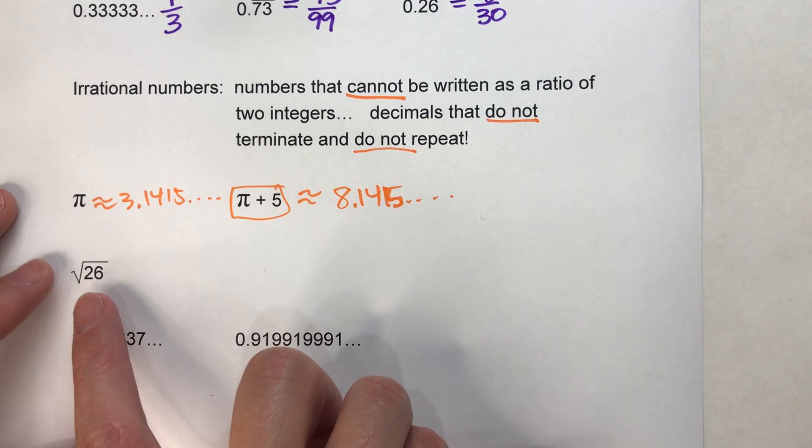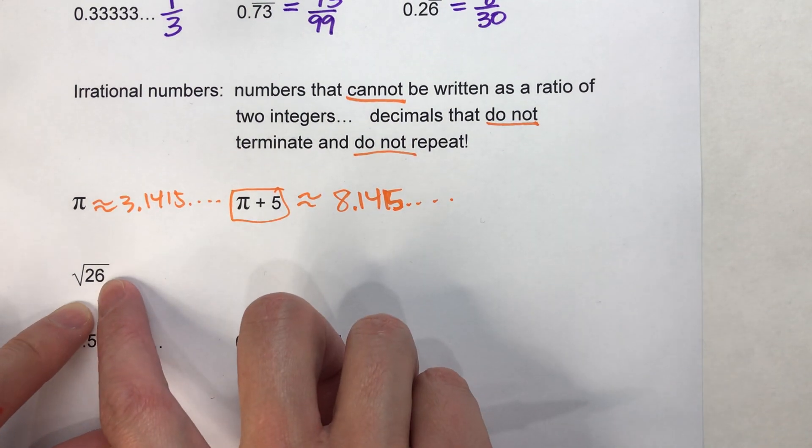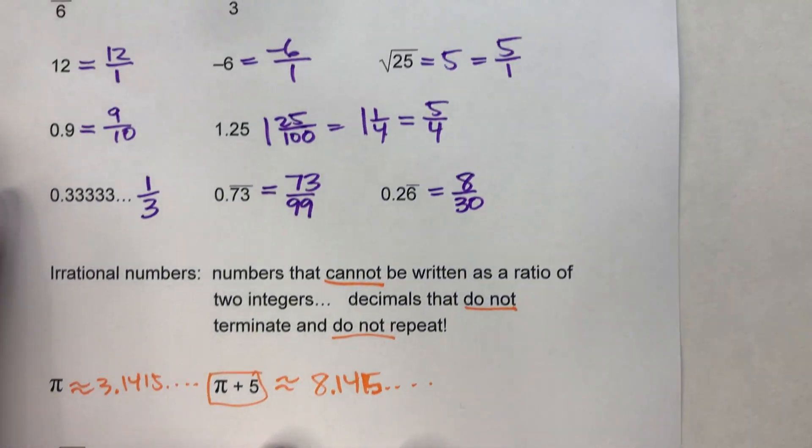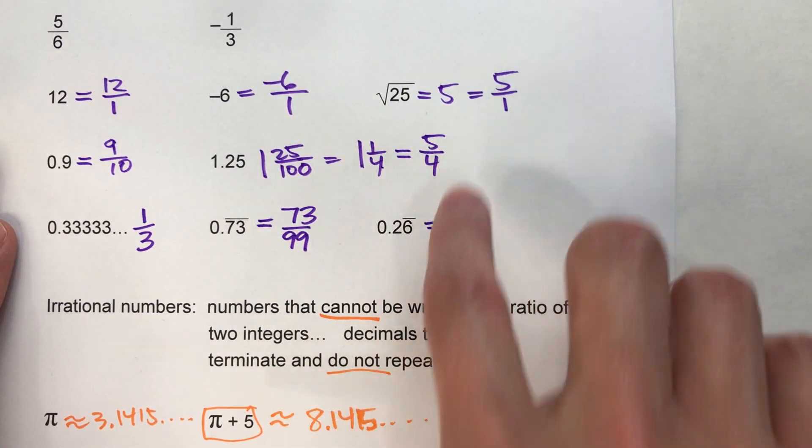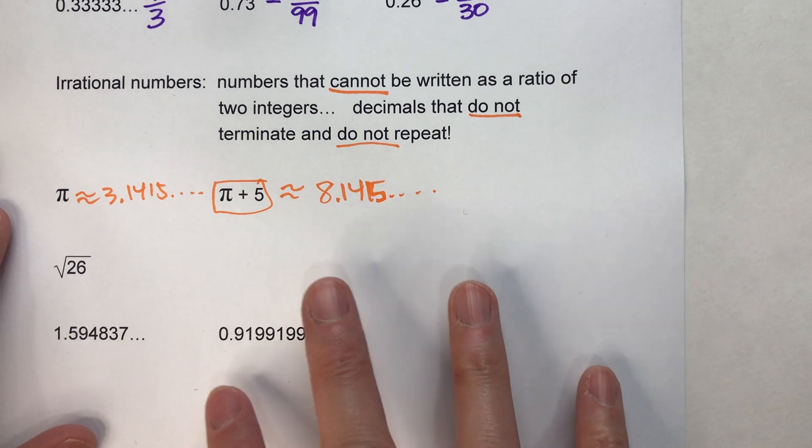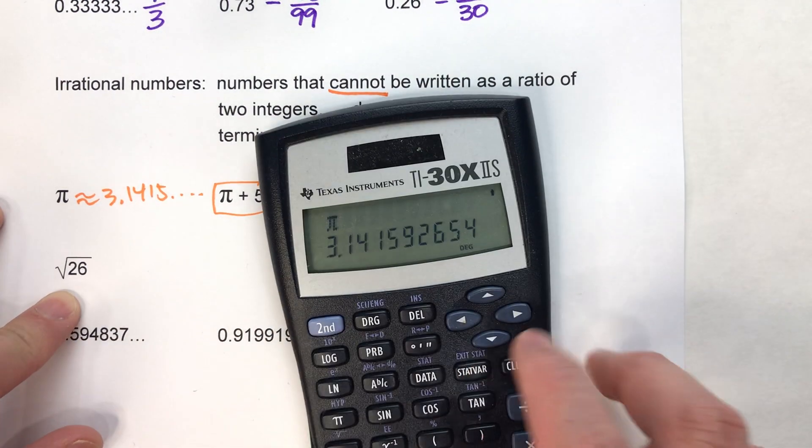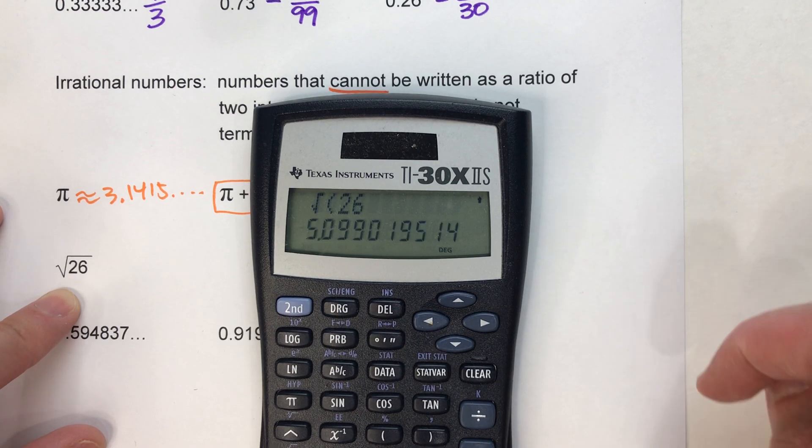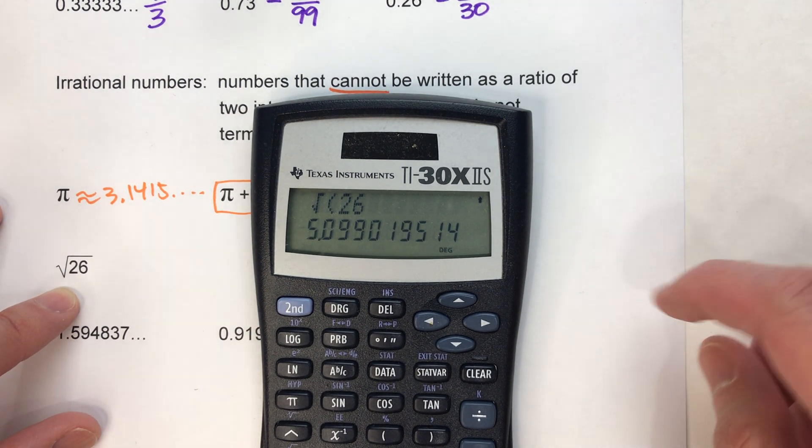So there's an example of irrational numbers. Now, it turns out a lot of square roots are also irrational. If you take the square root of a whole number and you do not get a whole number as an answer—for example, like this one gave you a whole number—but if you take the square root of a whole number and you don't get a whole number back, like the square root of 26, it turns out it's always going to be irrational.